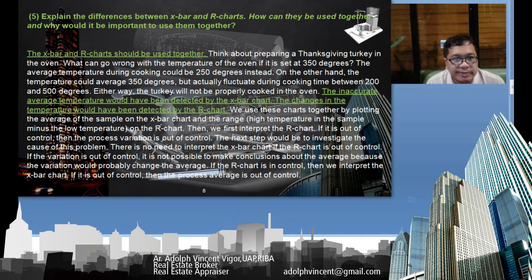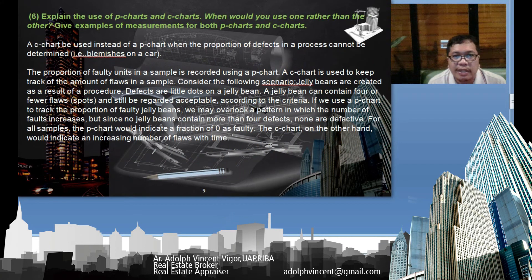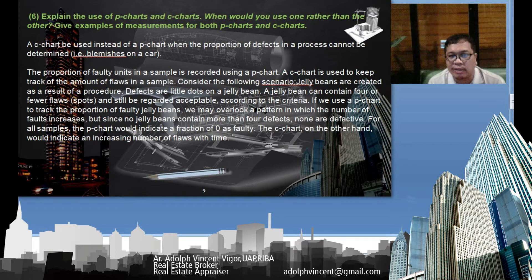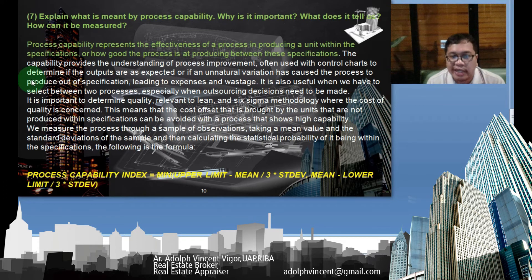The sixth question: explain the use of P-charts and C-charts. A C-chart can be used when the proportion of defects in the process cannot be determined. The proportion of defective units in a sample is recorded using a P-chart, and a C-chart is used to keep track of the number of flaws in a sample.